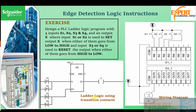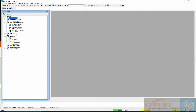Looking at the PLC ladder logic solution using transition contacts: since S1 or S2 going high should set the output, we use positive transition contacts for S1 and S2 with an RS flip-flop to set output X. If a pulse goes from zero to high, the set input becomes active and the output follows. S3 and S4 use negative transition contacts — when the pulse goes away, the output is reset to zero, performing the reset operation.